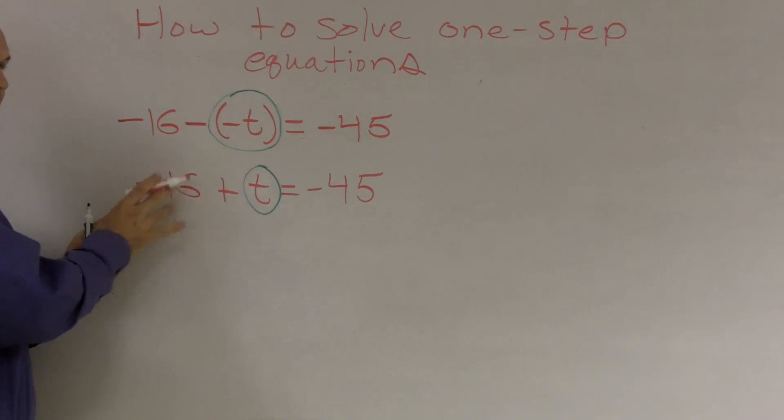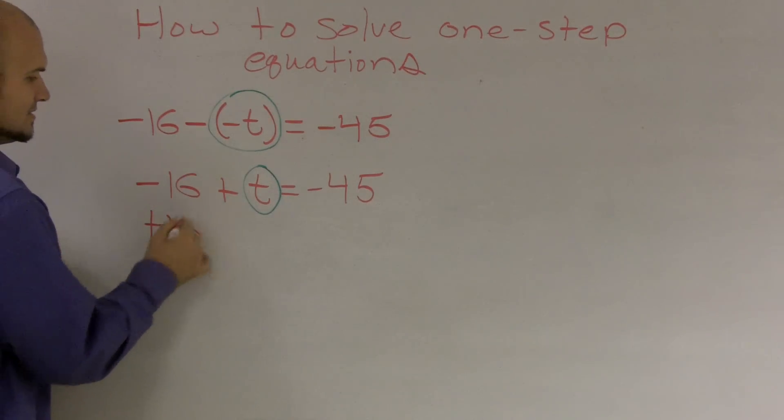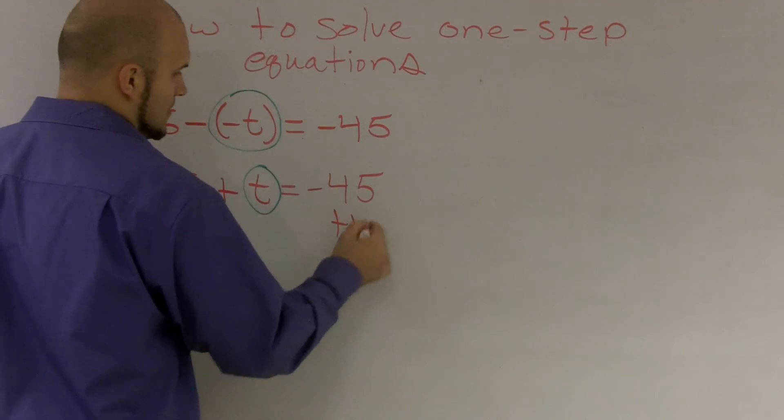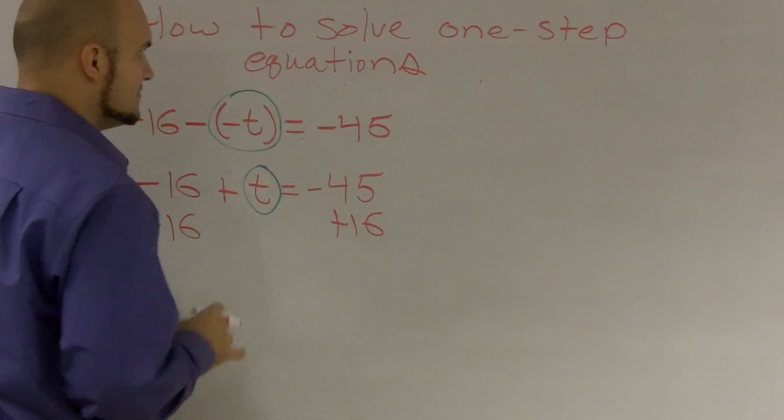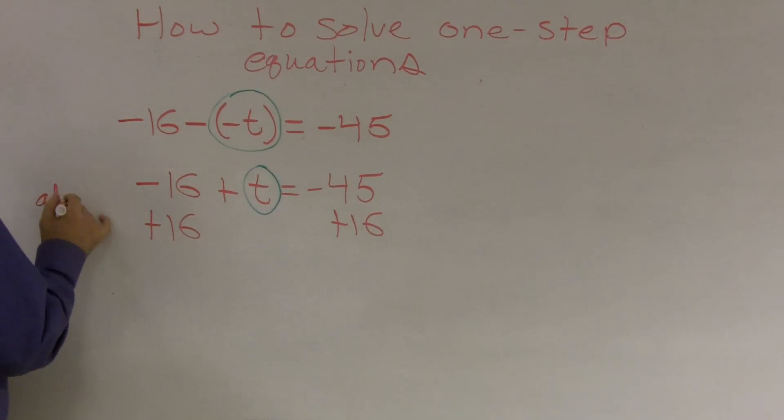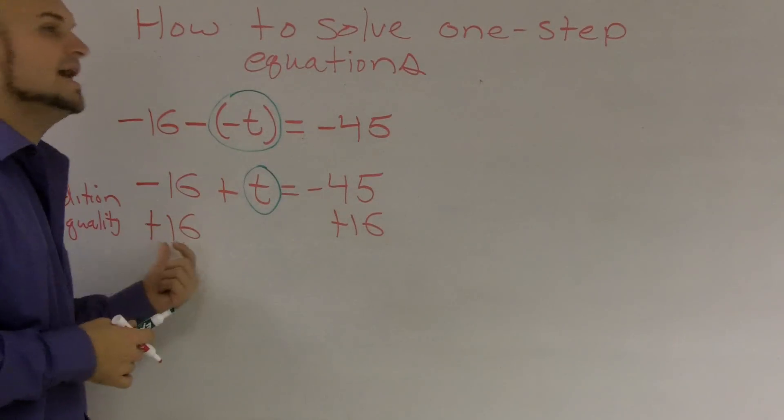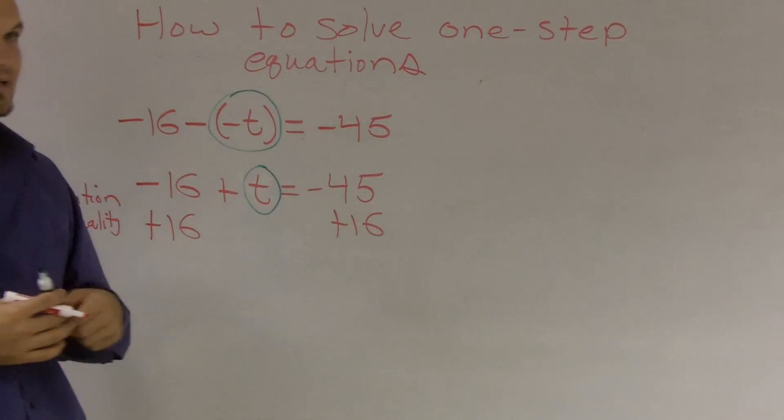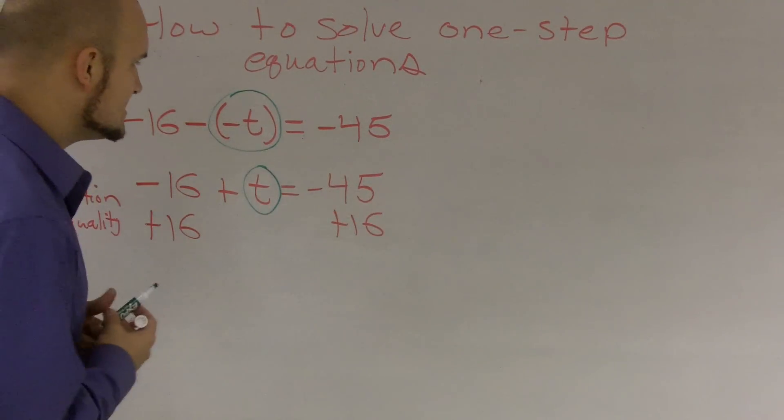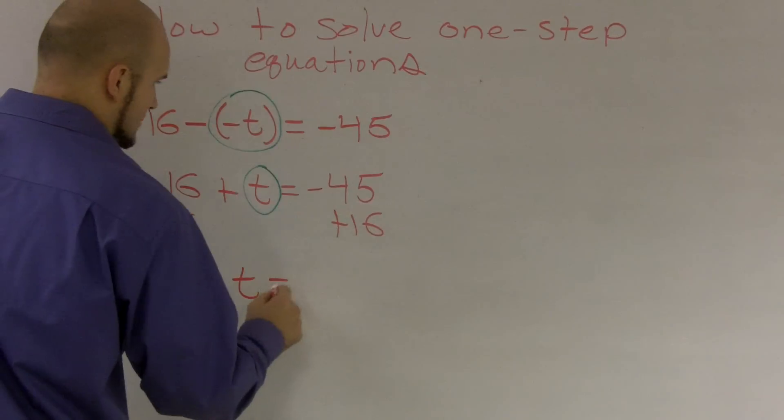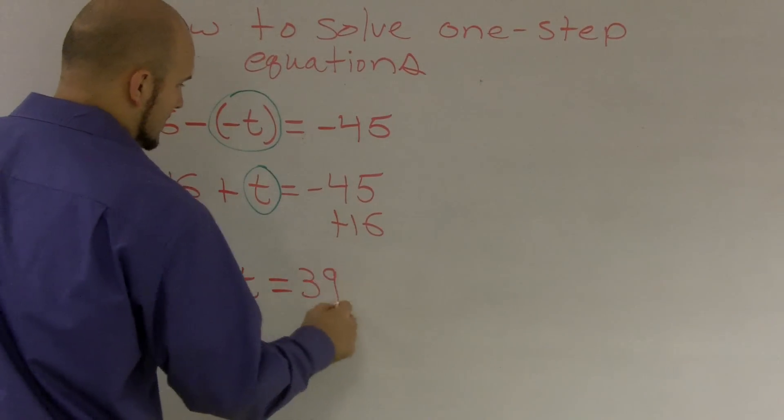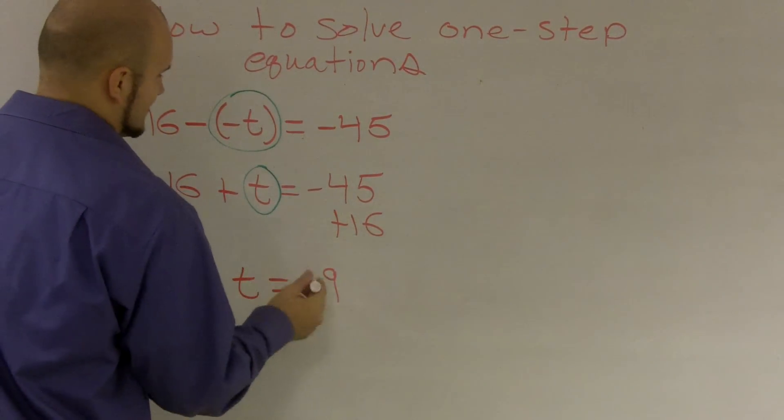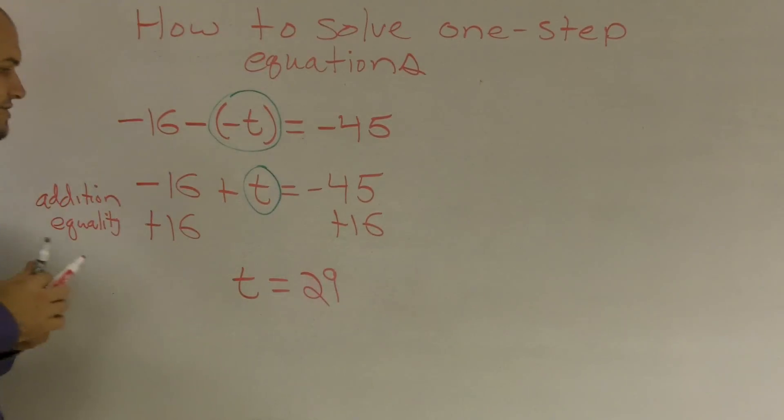So I need to do the opposite to get this t by itself. I'm going to add 16 to both sides. And when I'm adding 16, what I like to write is the addition property of equality. The reason why I write that is to remind me that I have to add my number on both sides of my equation. So therefore, when I add 16 to my 45, I get t is equal to 29.